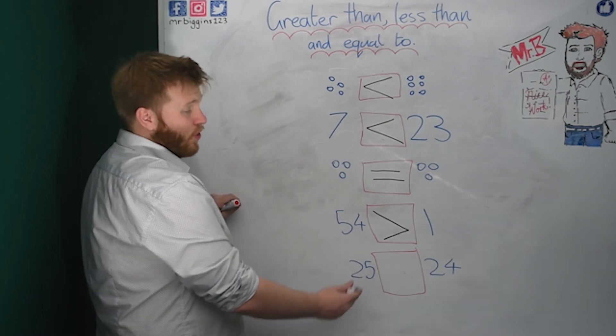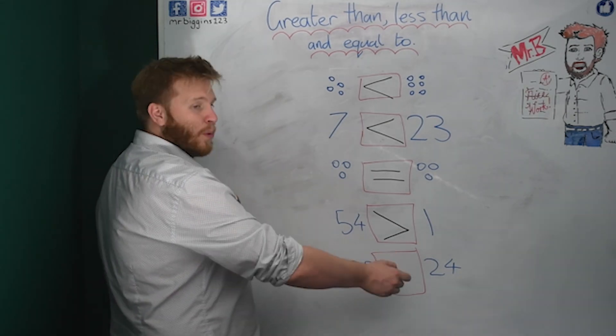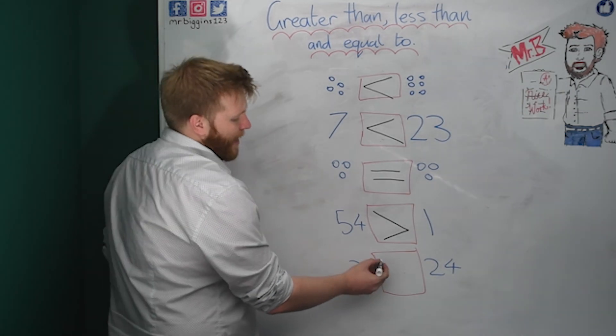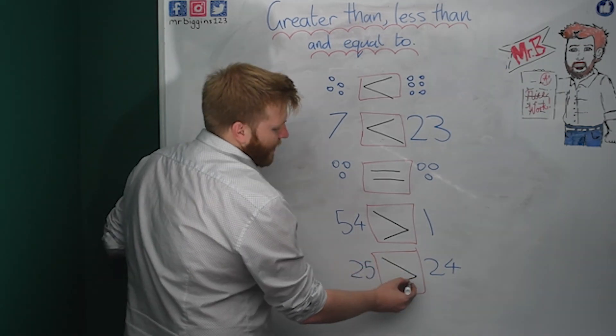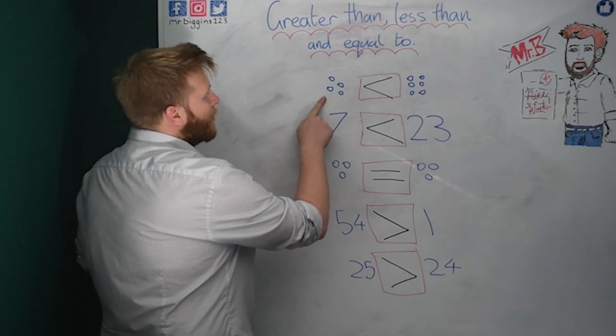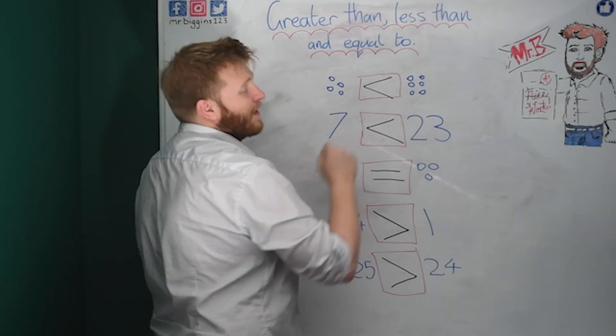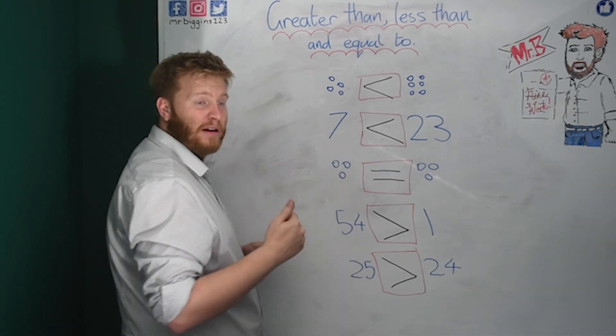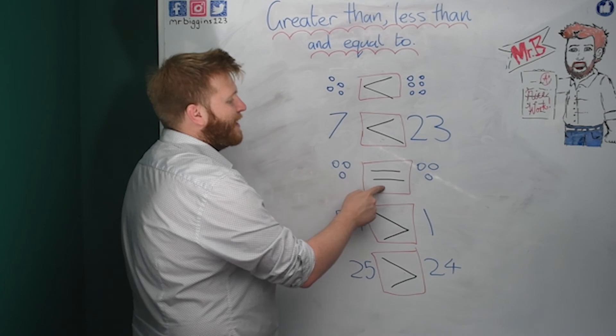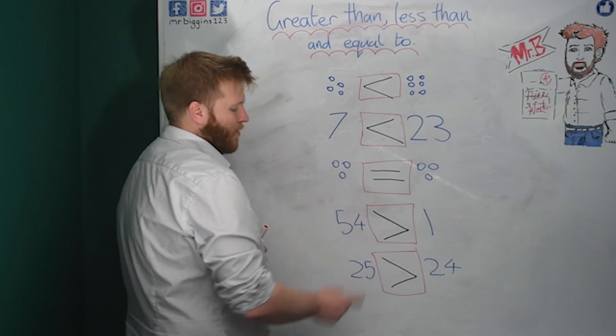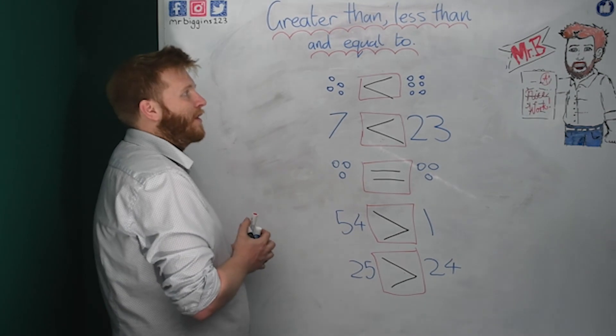And your last one, two numbers that are close. Twenty-five and twenty-four. Well, we know there's more than twenty-five. So again, we would have our greater than symbol to say it's greater than twenty-four. So we've got four is less than six. We've got seven is less than twenty-three. Three is equal to three. Fifty-four is greater than one. And twenty-five is greater than four.